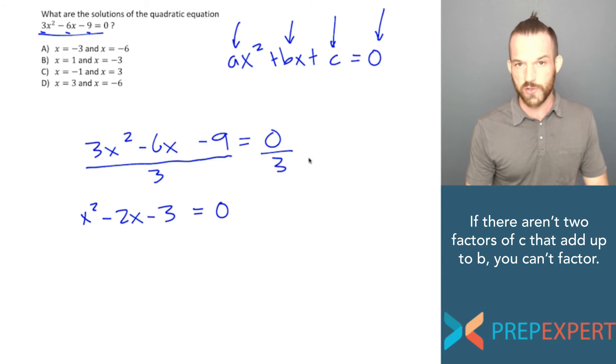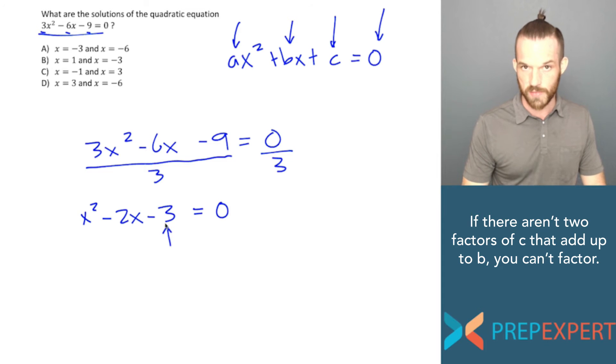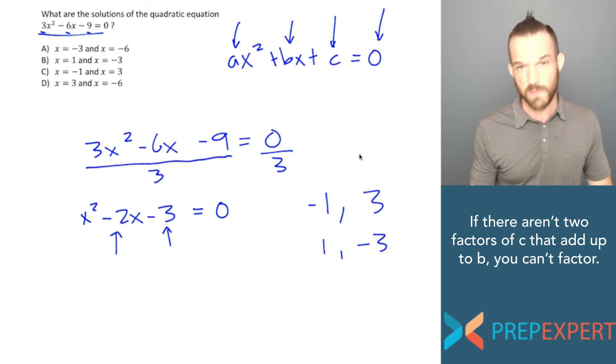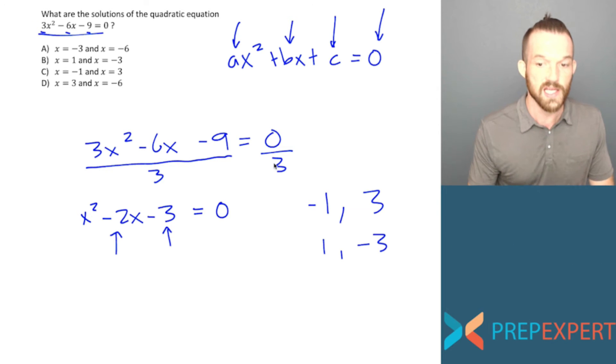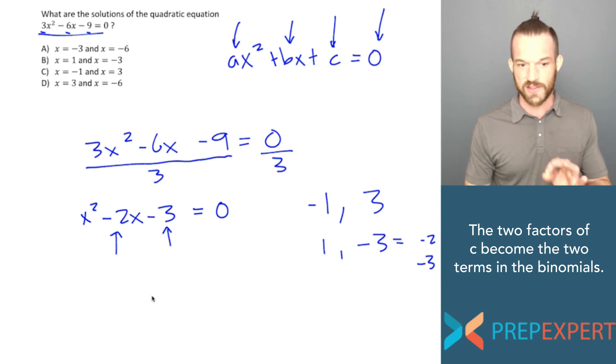Now, once I got the quadratic in this form, all I have to do is look for two factors of the c term that add up to the b term. So in this case, I'm going to look for two factors of negative 3 that add up to negative 2. So the first two factors of negative 3 that occur to me are 1 and 3, where one of them is negative. It can either be negative 1, positive 3, or positive 1, negative 3. If I multiply either of those out, I'm going to get the product negative 3. Now, which one of them would have a sum that's equal to negative 2? I think it's going to be the second version, 1 and negative 3. If I add them together, I'm going to get negative 2. If I multiply them together, I'm going to get negative 3. So those are the ones I want.